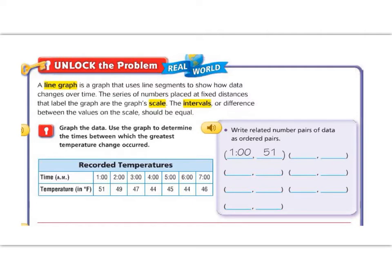A line graph is a graph that uses line segments to show how data changes over time. The series of numbers placed at fixed distances that label the graph are called the graph's scale. The intervals or difference between the values should be equal.